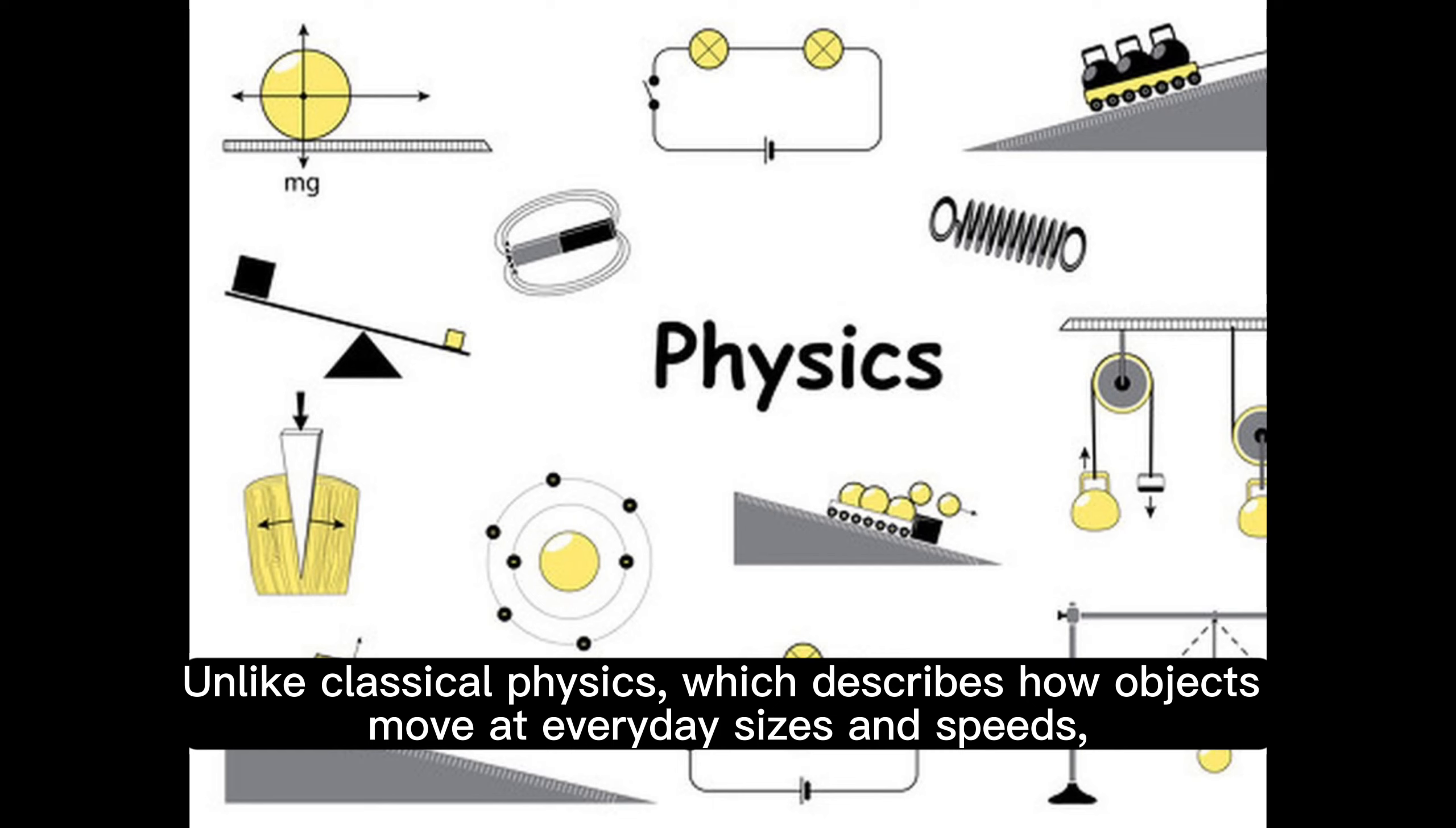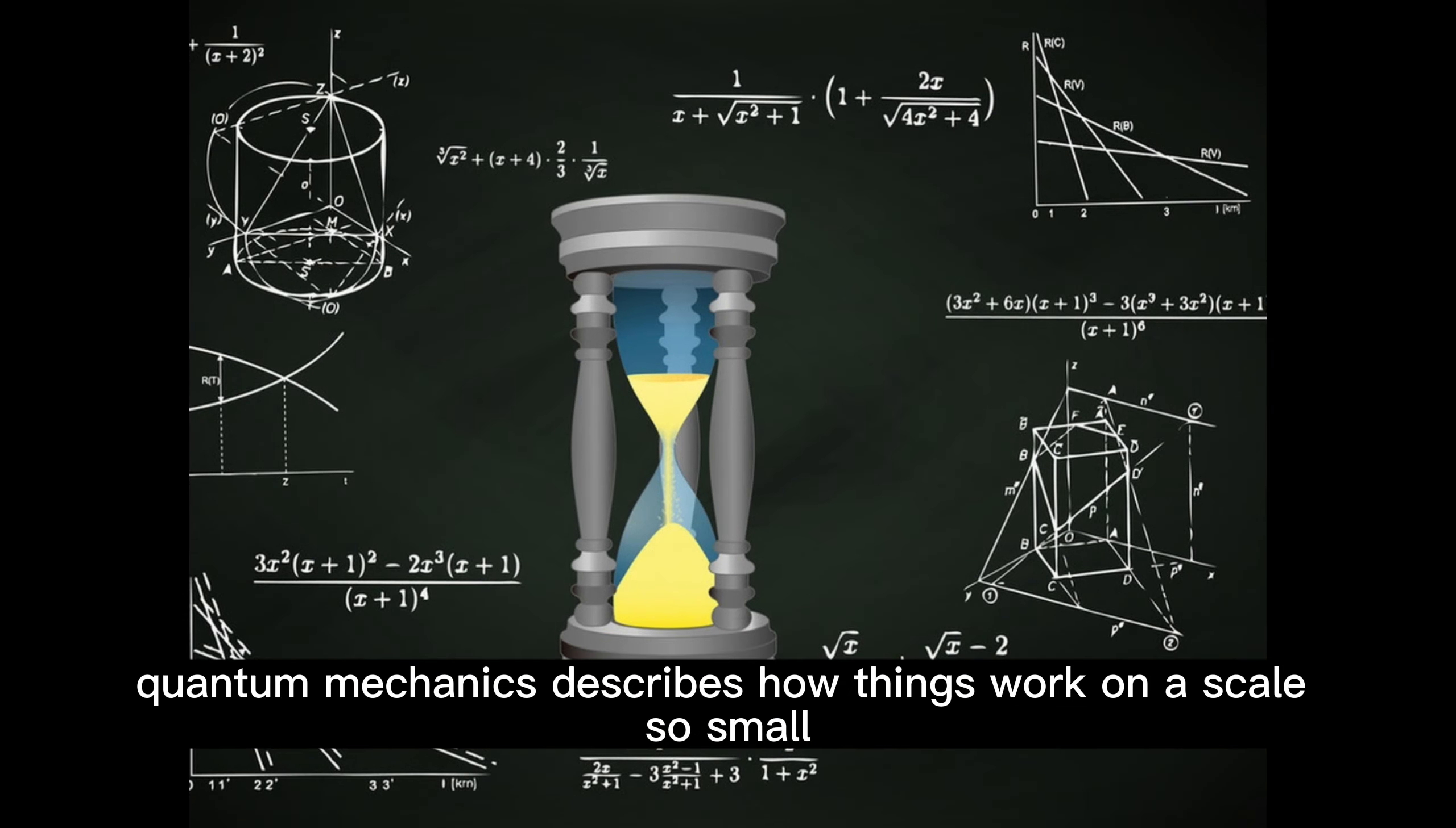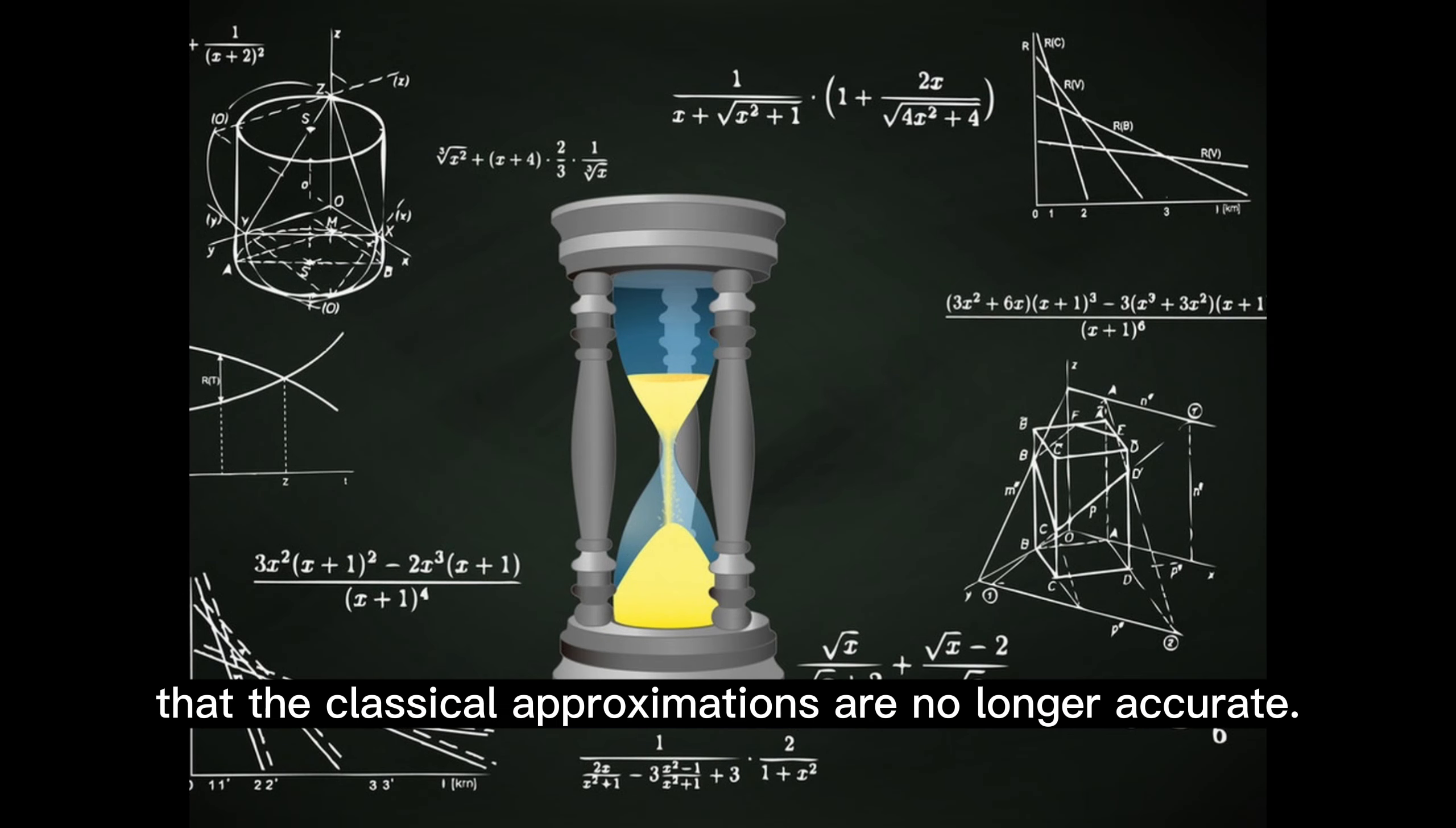Unlike classical physics, which describes how objects move at everyday sizes and speeds, quantum mechanics describes how things work on a scale so small that the classical approximations are no longer accurate.